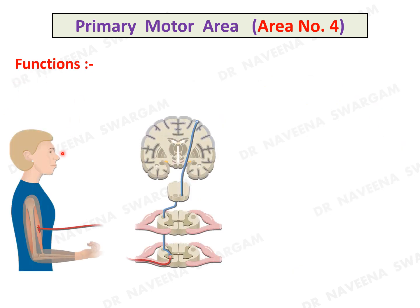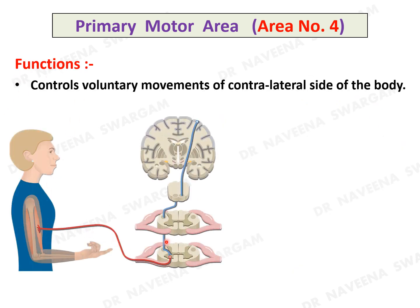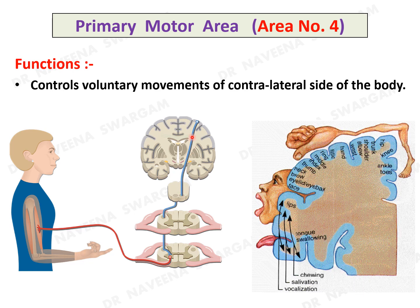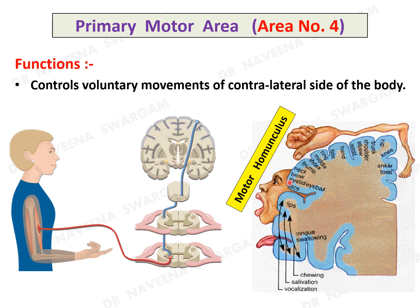The primary motor area controls voluntary movements of the contralateral side of the body. The somatotopic representation of the primary motor area is known as the motor homunculus. It explains that movements of the lower limb below the knee are controlled by the area on the paracentral lobule, while movements of the hip, trunk, upper limb, neck, face, and tongue are controlled from above downwards on the precentral gyrus.